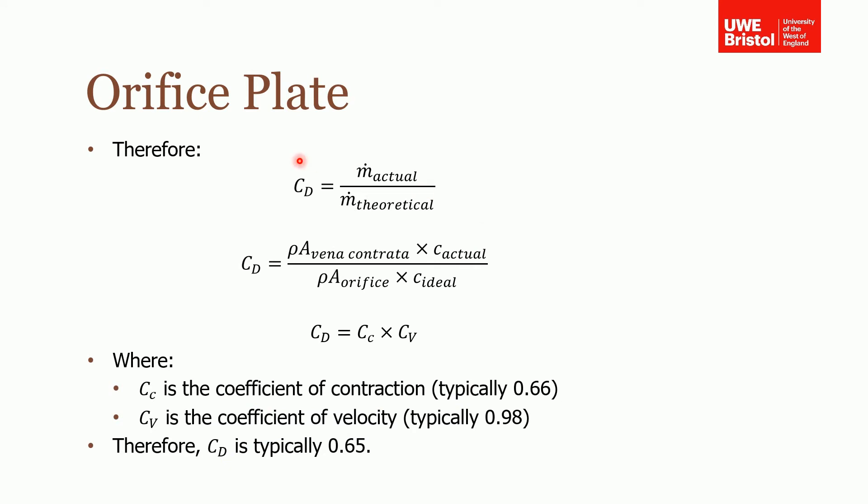When we consider the discharge coefficient for an orifice plate, the discharge coefficient is equal to the actual mass flow rate divided by the theoretical mass flow rate. If we write these out, remembering that mass flow rate is ρAC, for our theoretical mass flow rate the flow rate is the density times the orifice area times the ideal velocity.